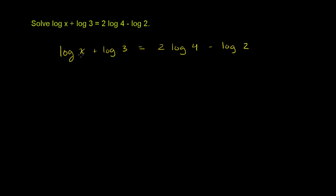Just as a reminder, whenever you see a logarithm written without a base, the implicit base is 10. So we could write 10 here for each logarithm. But for the rest of this example, I'll skip writing the 10 to save time. Remember, this literally means log base 10.